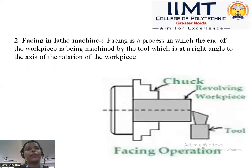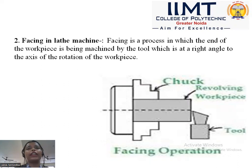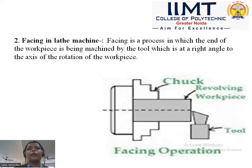The second operation is facing. Facing is the process in which the end of the workpiece is machined by a tool at a right angle to the axis of rotation of the workpiece. It is used to clean or give a desired shape to the face of the workpiece. The tool works perpendicular to the workpiece rotation. It may require removing only a very small amount to clean the surface, or it may be used to decrease the diameter as desired.